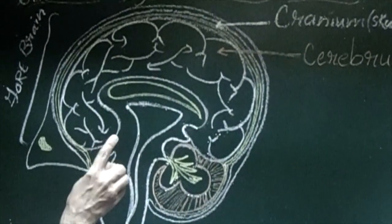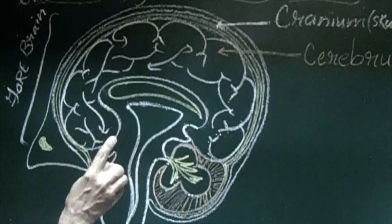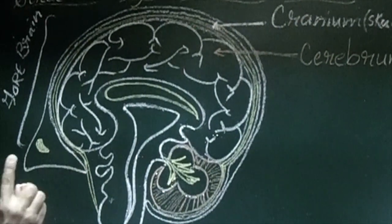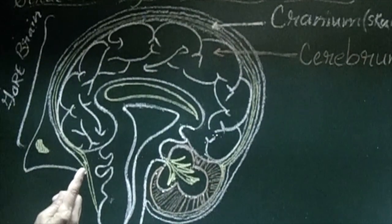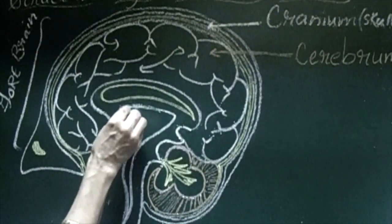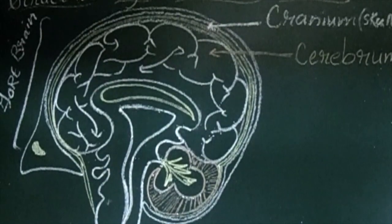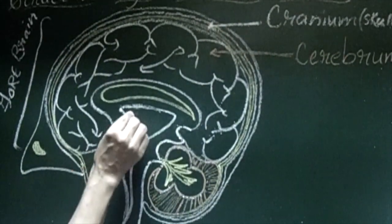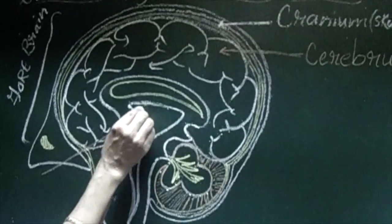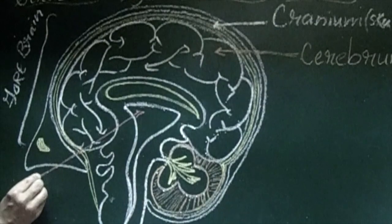Another part of forebrain we call it as diencephalon. Diencephalon consists of thalamus and then hypothalamus. In your book it is given only hypothalamus. This is the part, it is hypothalamus.